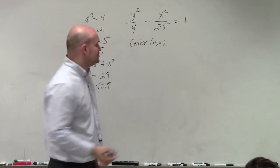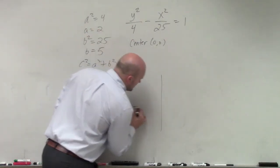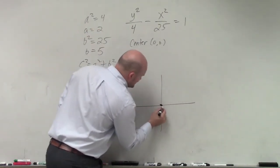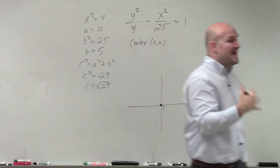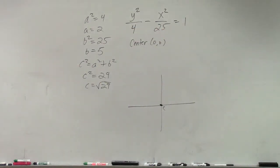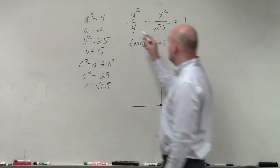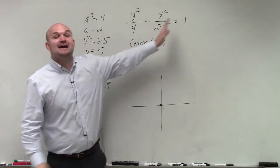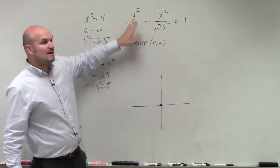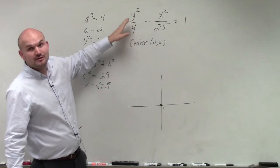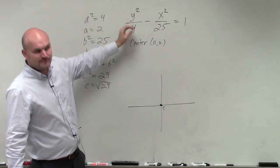Now, I kind of have enough information that I can draw a general sketch. So I know my center is at 0, 0. Now, since my a is under my y, because remember, it's always a squared minus b squared, right? Since my a squared is under my y, my transverse axis then is vertical or horizontal? Vertical.